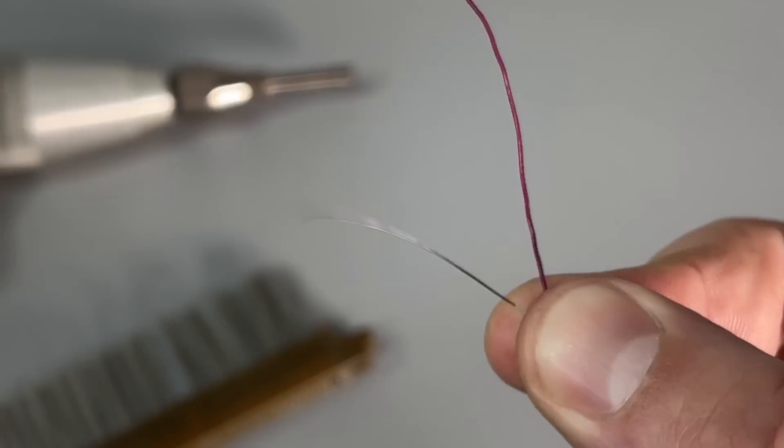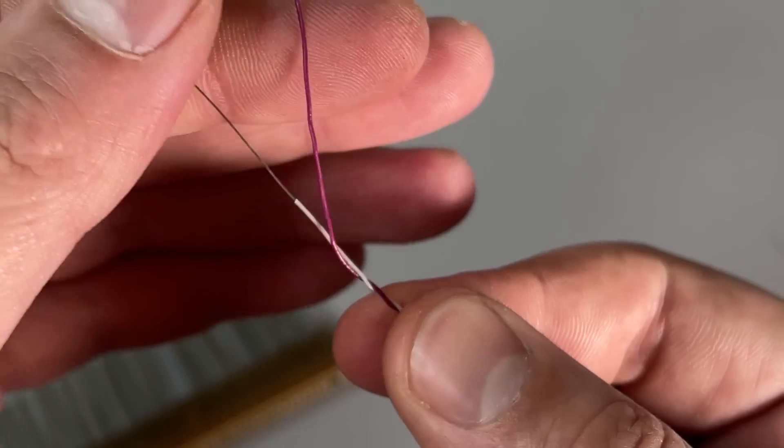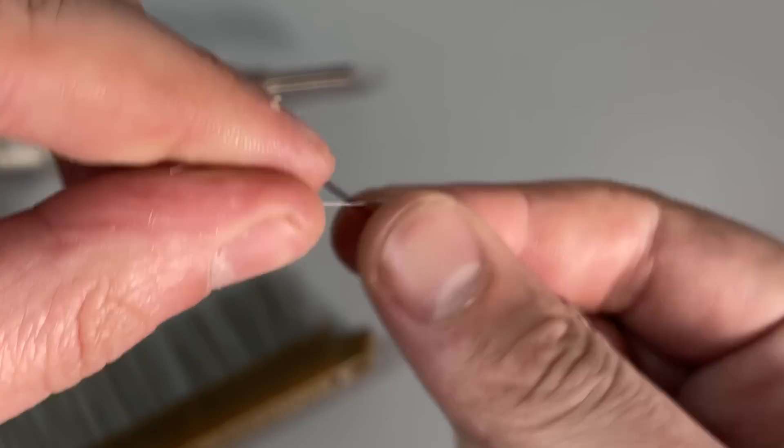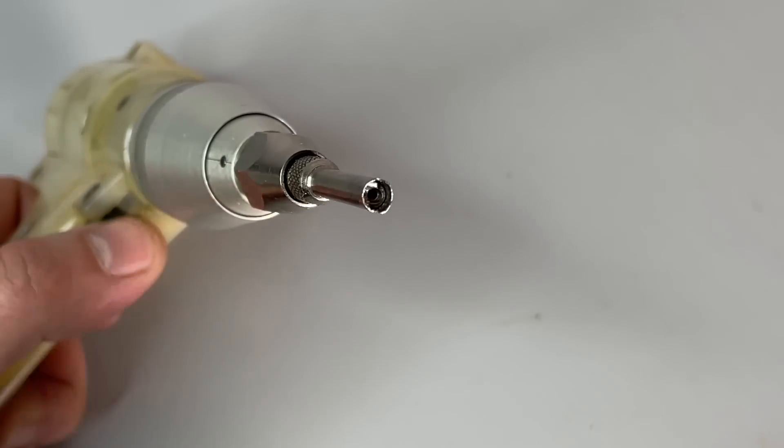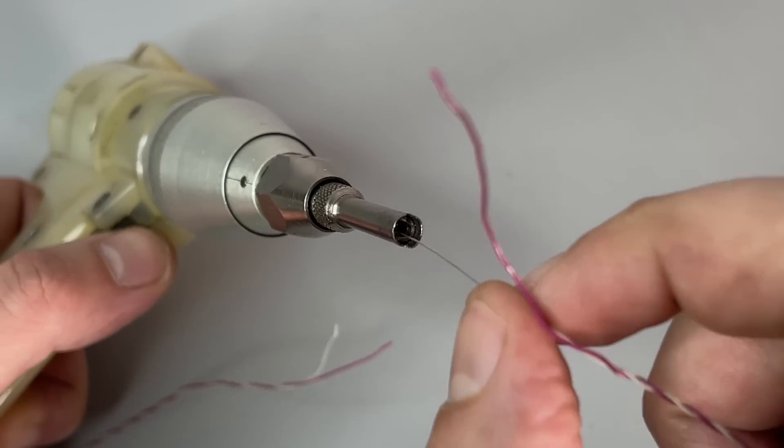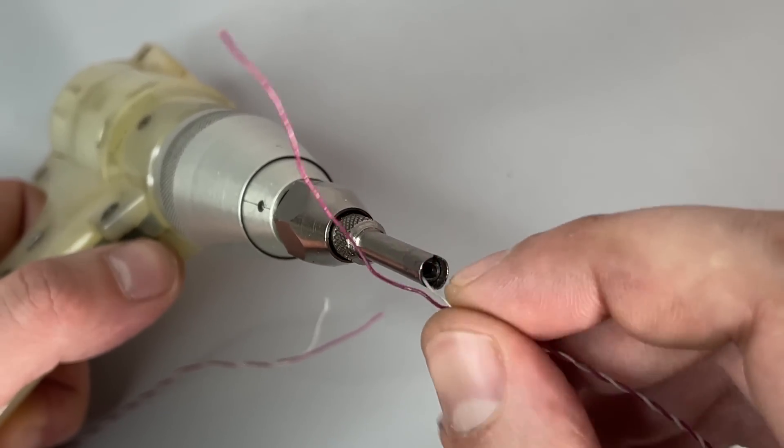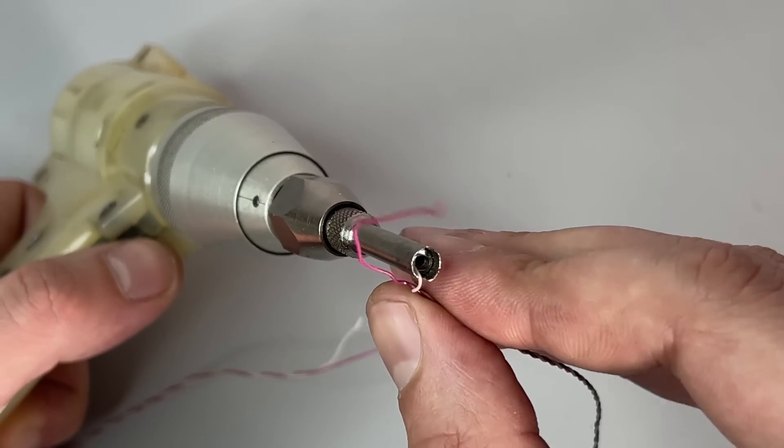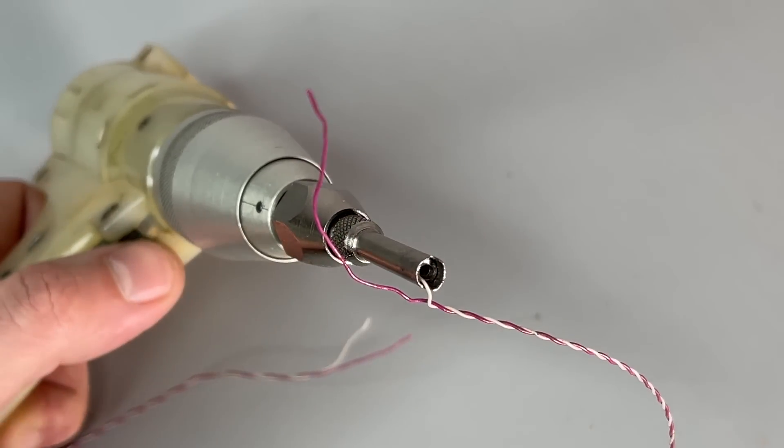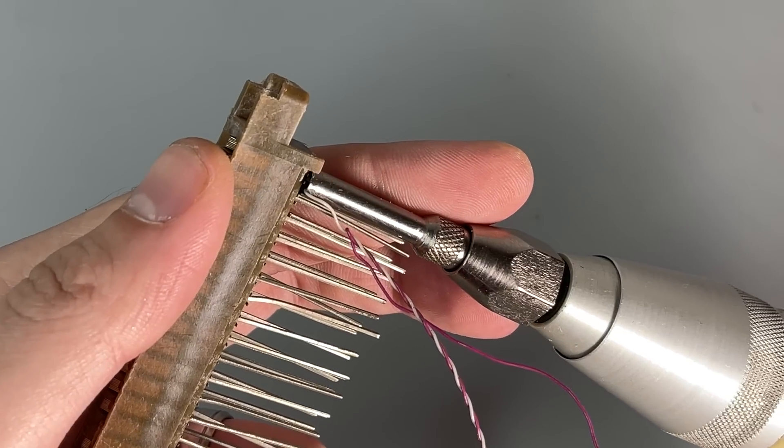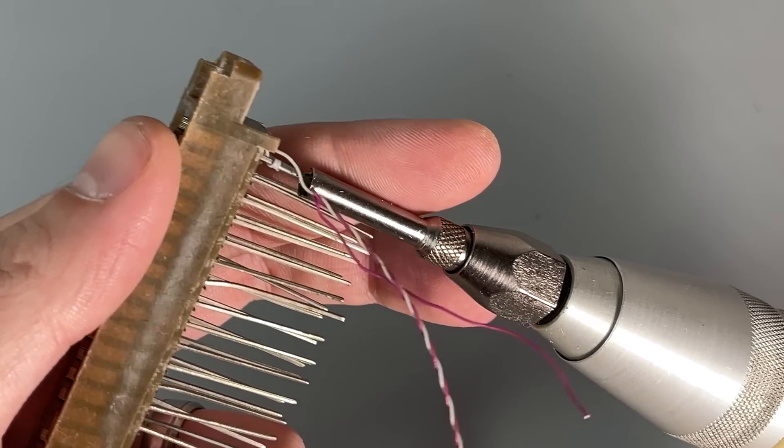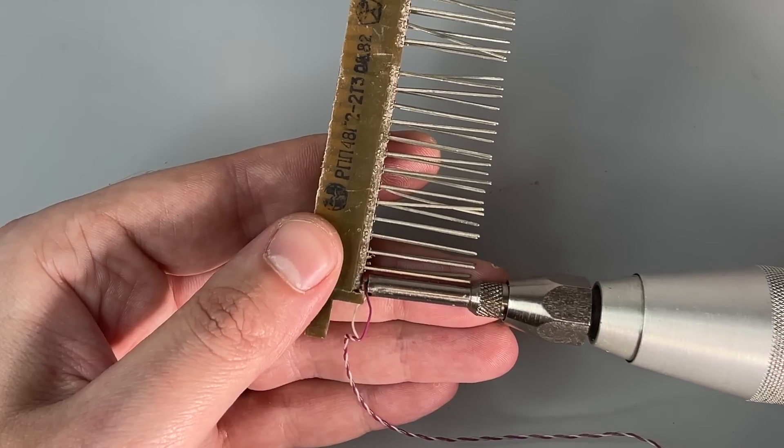So I clean about one inch of the insulation away. In fact, how much to clean exactly varies on the task, and you pretty much get used with practice. Then I insert the wire into the instrument and position the pin inside. Then I press the trigger and hold for a second or two.